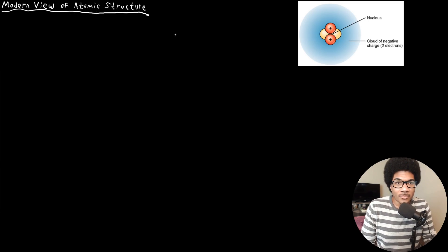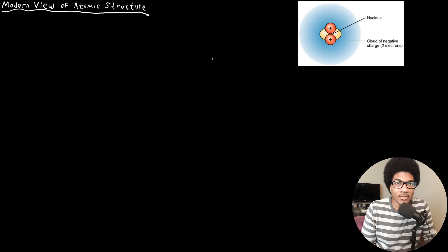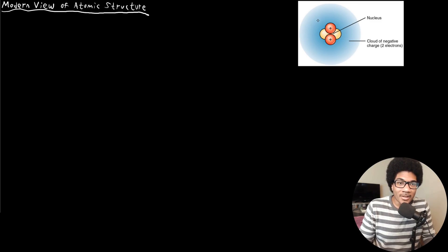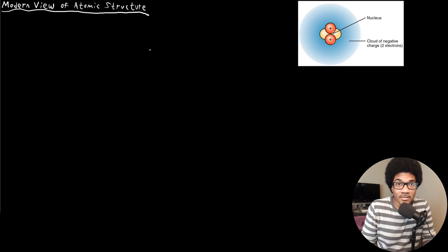Now what I want to do is shift gears and go into what we know about the atom at this point and how it can help you identify different things in chemistry and atomic structure. This figure on the right is a summary of what we know about the atom. This picture is still fairly simplistic, but it gives us a great visual representation to start discussing atomic structure in its modern context.